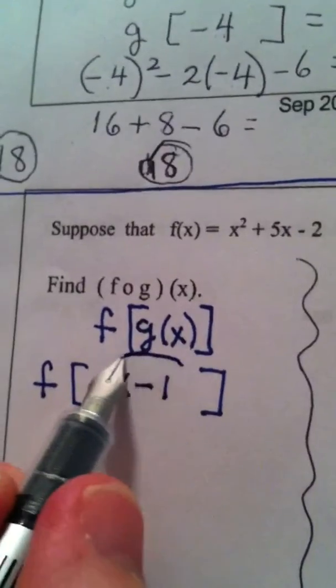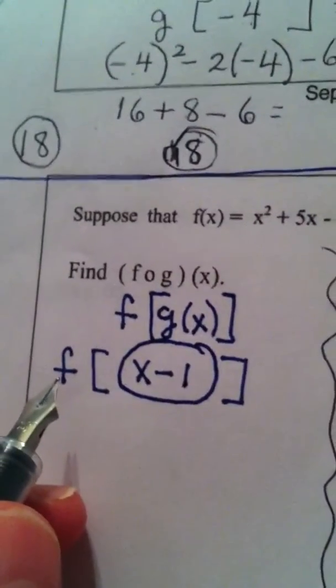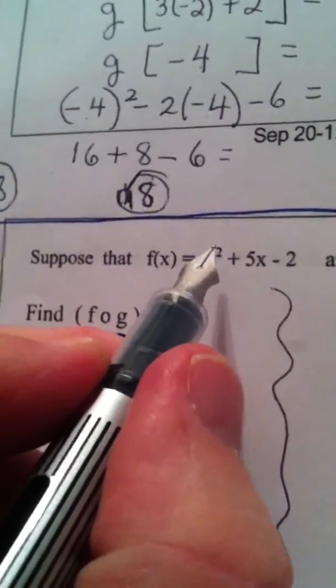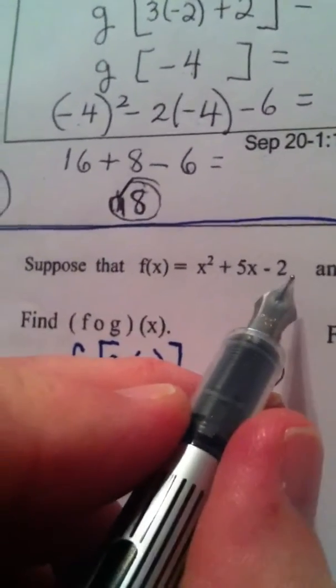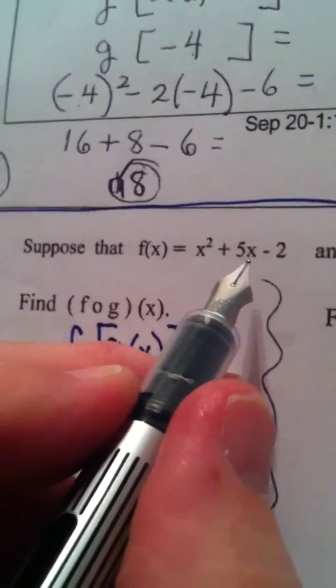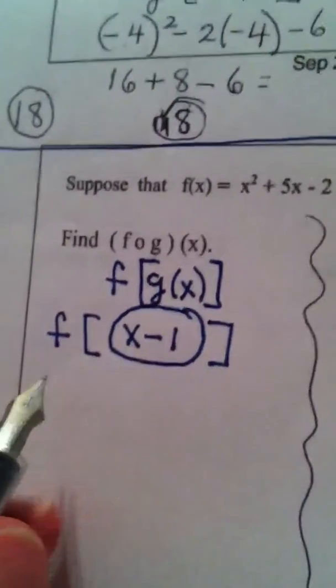Now, this gets put into the function f. And notice what function f does. It takes the input squared plus 5 times the input minus 2. Okay, input squared plus 5 times the input minus 2. The input is x minus 1.